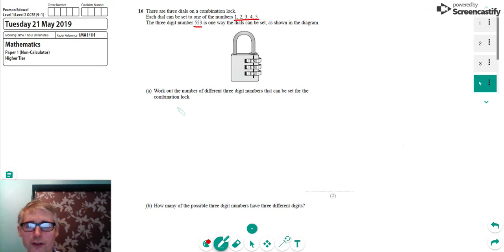We can see that the first dial can be set in five different ways, and the second dial can also be set in five different ways, so we can multiply those two together. The third dial also can be set in five different ways. So all we have to do is multiply 5 times 5 times 5, which gives us 125.